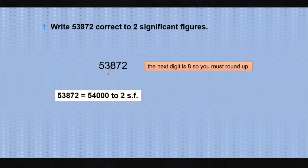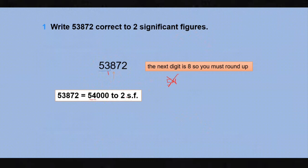Remember, the zeros here are not significant, but the value must be equivalent. It is a five-digit number, so the answer must also be a five-digit number. Some students make the mistake of writing just 54 — that is wrong. The significant figures here are only 5 and 4; the three trailing zeros are not significant but are needed to preserve the value.